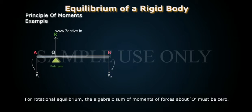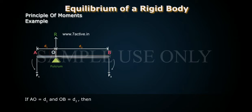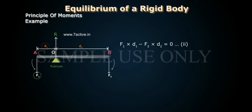For rotational equilibrium, the algebraic sum of moments of forces about O must be zero. If AO is equal to D1 and OB is equal to D2, then F1 into D1 minus F2 into D2 is equal to zero, equation two.